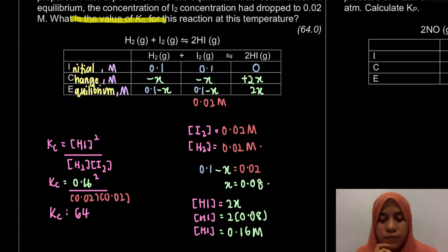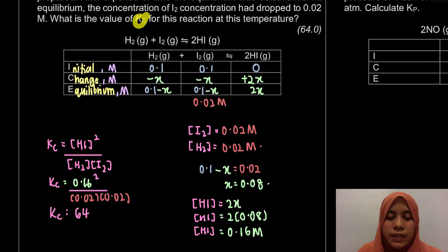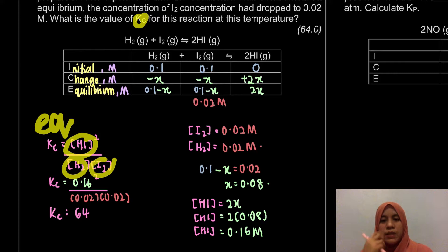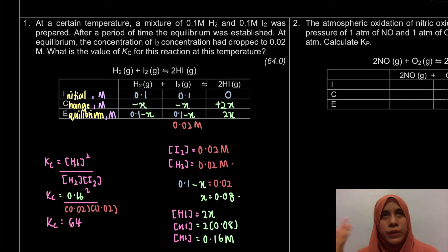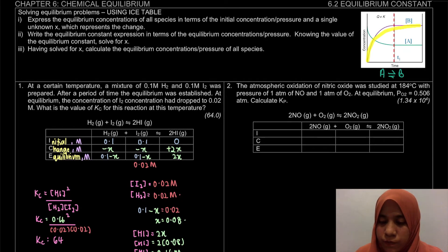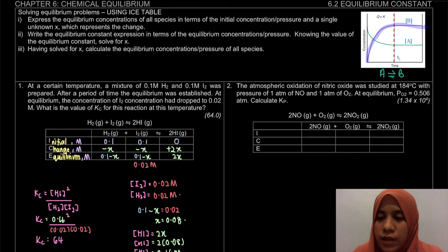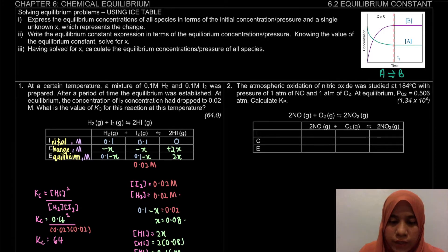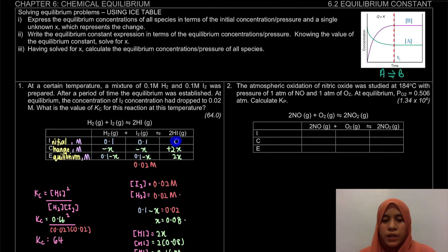To summarize: KC means equilibrium constant, and we must use concentrations at equilibrium. When the equilibrium concentrations are not directly given, use the ICE table — Initial, Change, Equilibrium. Make sure to include the unit. For reactants, the change must be minus; for products, the change must be plus, because as the reaction proceeds the product concentration increases and the reactant concentration decreases. At the start of the experiment, the initial value for the product is zero.